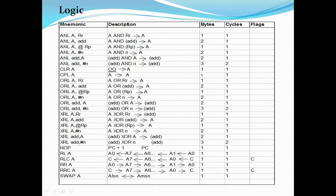XRL performs XOR logic between the accumulator and a register, between the accumulator and an address location, between the accumulator and a pointer register, between the accumulator and a constant value, between an address and the accumulator, and between an address and a constant value. NOP (no operation) simply increments the program counter (ROM location) by one address.